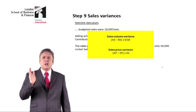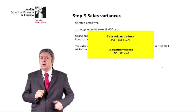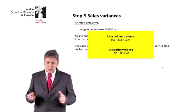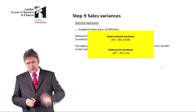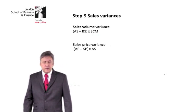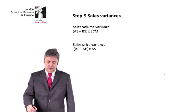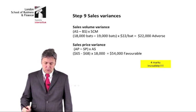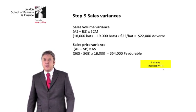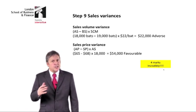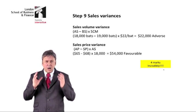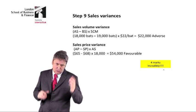The sales price variance is: actual price minus standard price, multiplied by the actual sales — just like the pro formas. Learn these — please learn them. Those are our pro formas; very straightforward. We bash the numbers out, and if it's positive it's favorable, if it's negative it's adverse. Nothing sophisticated there — four marks for that.